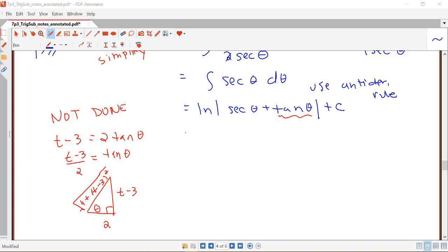So now we can write our final answer in terms of t. I'm going to have log the absolute value of secant theta, which for my triangle I see is going to be the square root of 4 plus t minus 3 squared over 2. Since secant theta will be hypotenuse over adjacent, then I'm going to have tangent theta, which is t minus 3 over 2 plus c. And so this is equal to the integral we were trying to find, which was the integral of dt over the square root of t squared minus 6t plus 13.